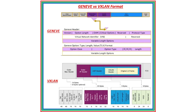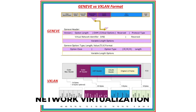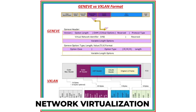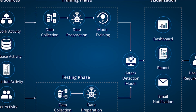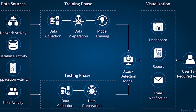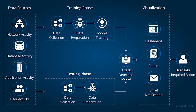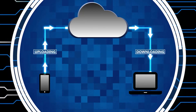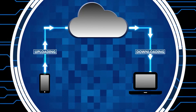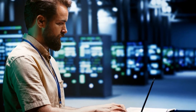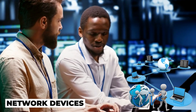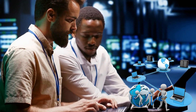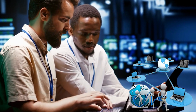VXLAN, NVGRe, and Geneve are protocols used for network virtualization, creating virtual networks over physical ones — like building a virtual city on top of a real one. While powerful, they add layers of complexity that can be exploited if not secured. OpenFlow is a protocol that enables software-defined networking — like giving network administrators a remote control to manage network devices centrally. But if someone else gets that remote, they can change your network configuration at will.